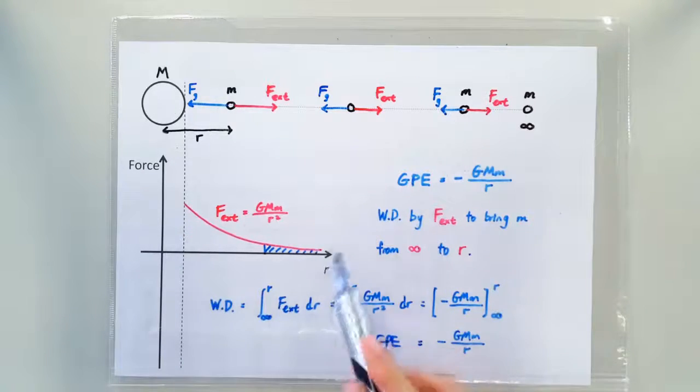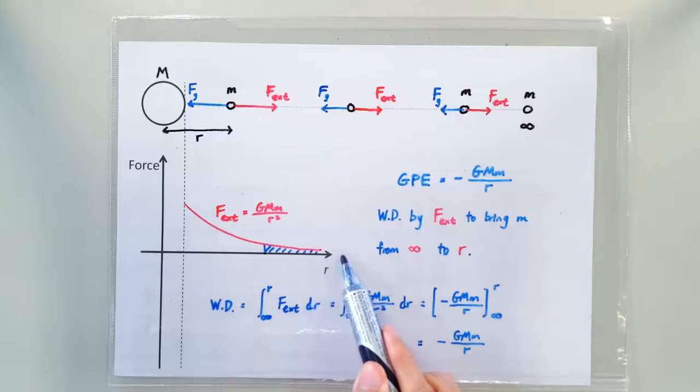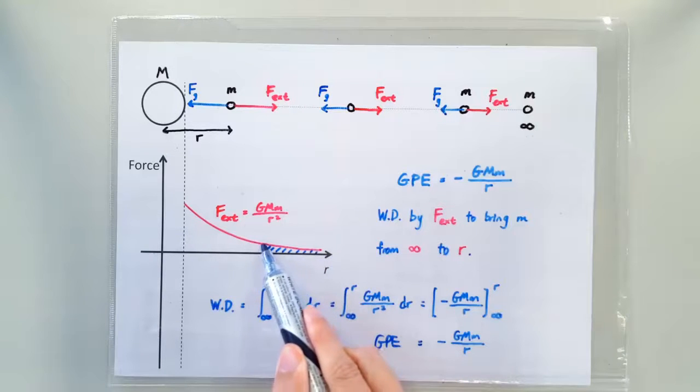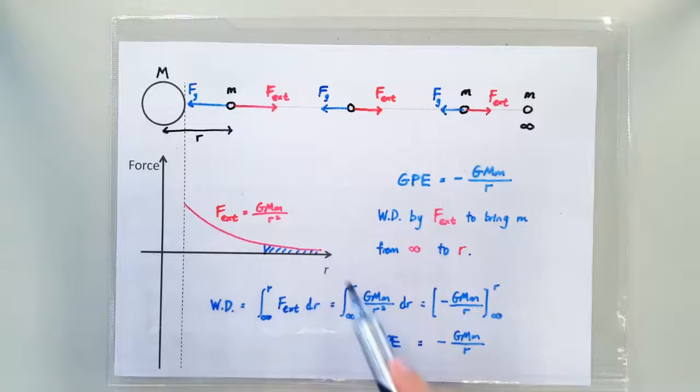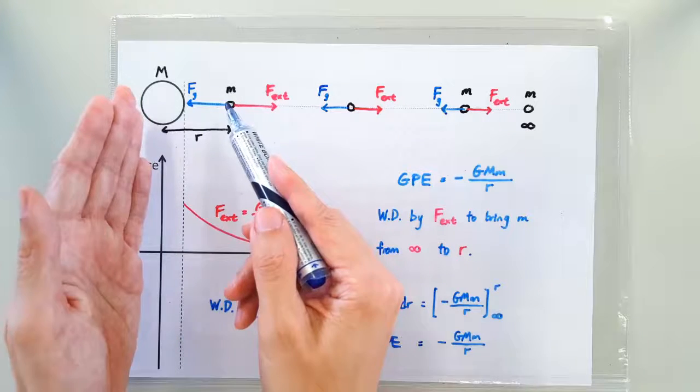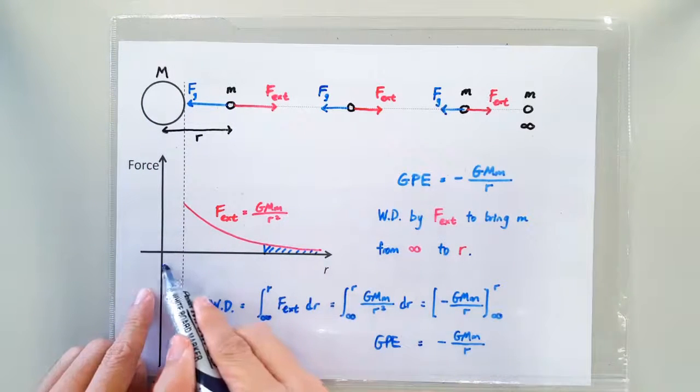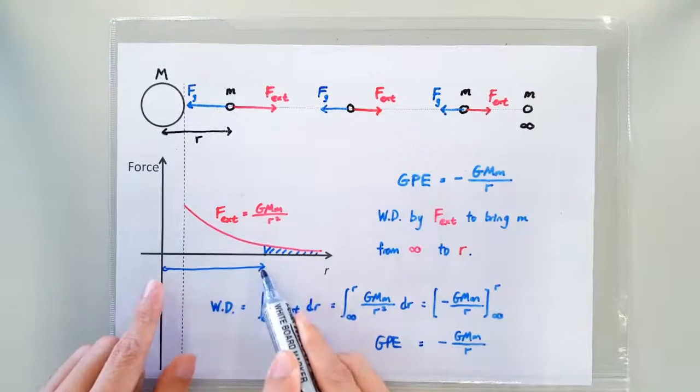So for example, the area under the graph from the points at infinity all the way to here, that means this shaded area here, this shaded area will correspond to the GPE stored between the two masses when they are separated by this distance here.